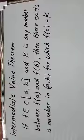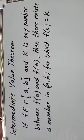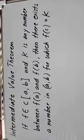and k is a number between f(a) and f(b), then there exists a number in (a, b) for which f(c) equals k.